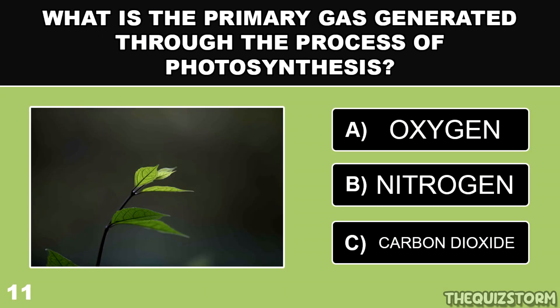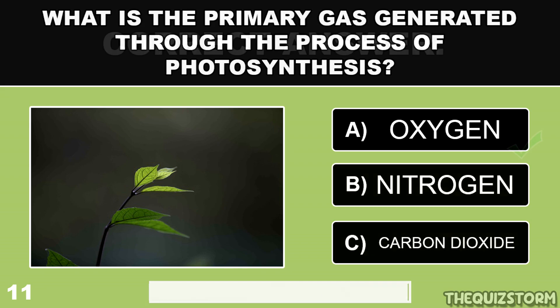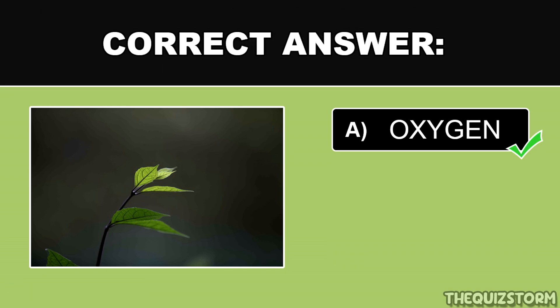What is the primary gas generated through the process of photosynthesis? And the correct answer is oxygen.